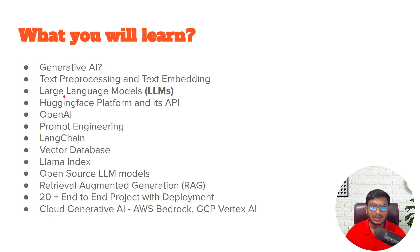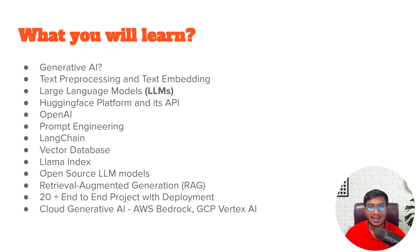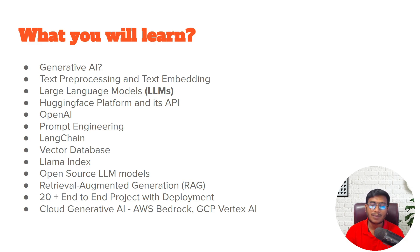Then we'll start with large language models — what they are, their use, and the different LLMs available that we can use as pretrained models. I'm also going to show you how we can fine-tune these models on top of our custom data. After that, we'll cover the Hugging Face platform and its API. Hugging Face hosts language models, image models, audio models — all kinds of models. I'll show you how to access different open-source LLMs and use the Hugging Face API.